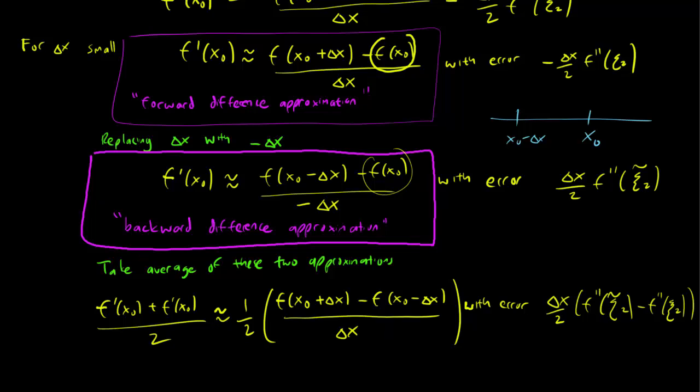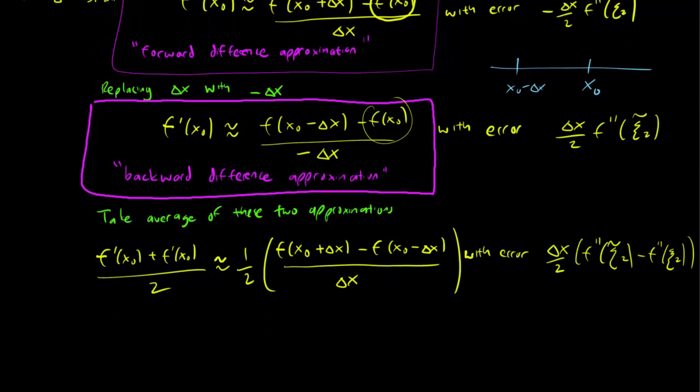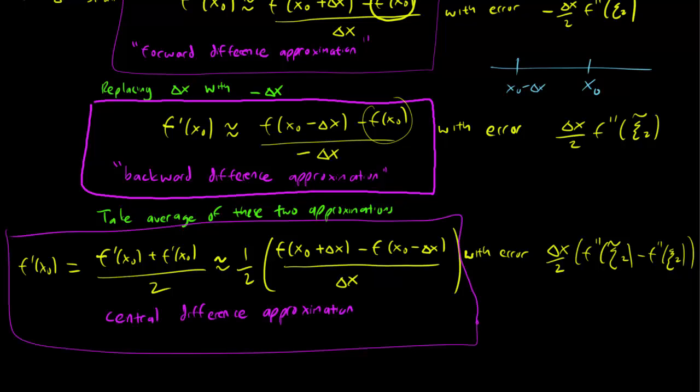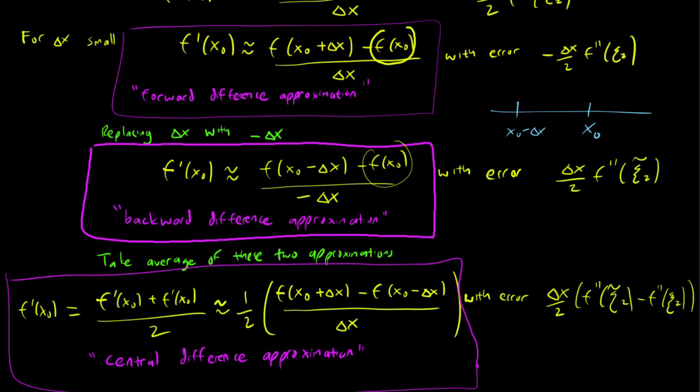And usually this error is going to be smaller than the error of both the forward and backward difference approximations. And this, of course, f'(x0) plus f'(x0) over 2 is just equal to f'(x0). And this is known as the central difference approximation. And usually we'll prefer to use the central difference approximation because the error tends to be smaller. But there are times in certain applications where people prefer using the forward and backward difference approximation.